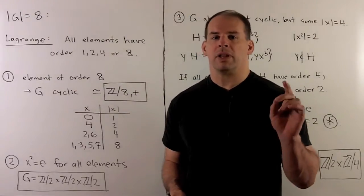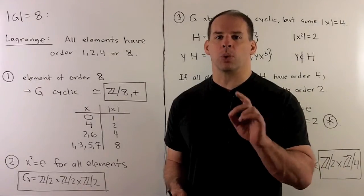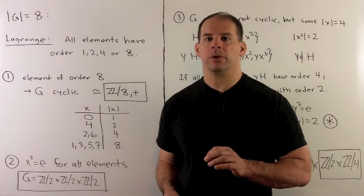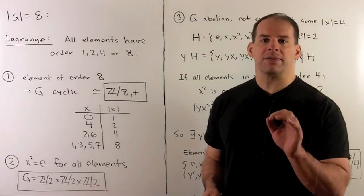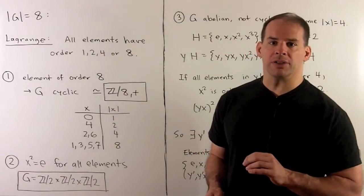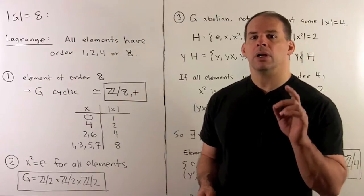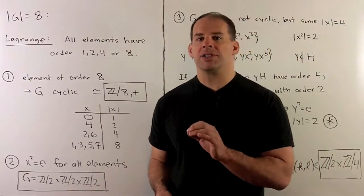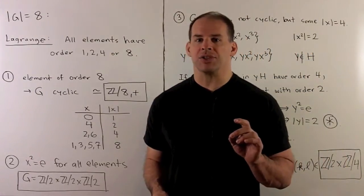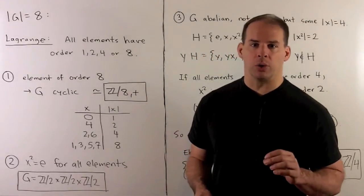Previously, we classified all groups up to order 7, up to isomorphism. Here, we'll classify the groups of order 8 up to isomorphism. We'll have three abelian classes, two non-abelian classes, and the new feature is the quaternion group.